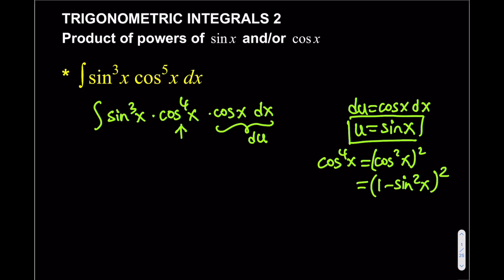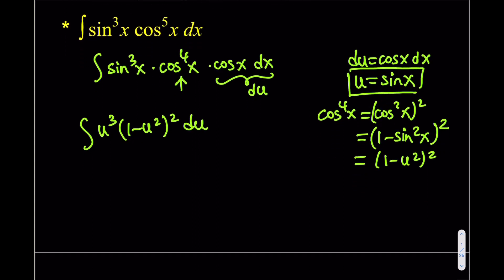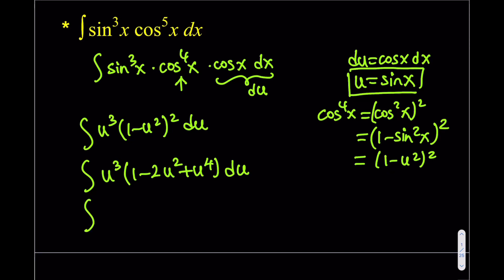So if sine x equals u, then (1 minus sine squared) squared becomes (1 minus u²)². Sine cubed x is u³. So we write it as u³ times (1 minus u²)² du. Now we expand: (1 minus u²)² is 1 minus 2u² plus u⁴. Distributing u³ gives u³ minus 2u⁵ plus u⁷ du.